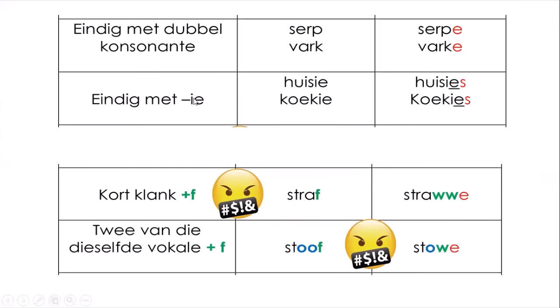As iets eindig met 'n E - if it ends with an E - there's already an E, you see that. So for words like 'huisie' and 'koei' and 'knie', we add an S instead. Huisies. Koei word koeie. Knie word knieë.